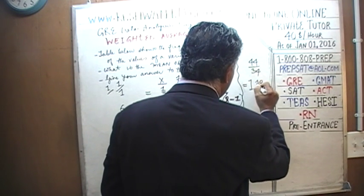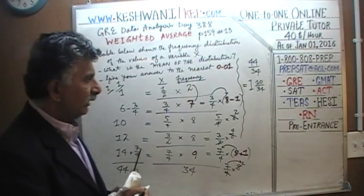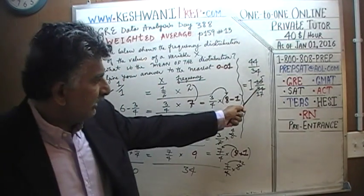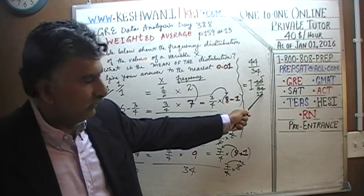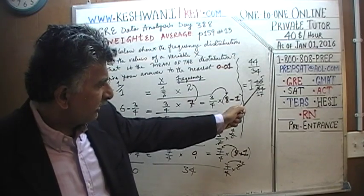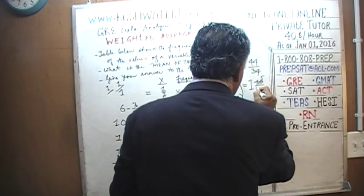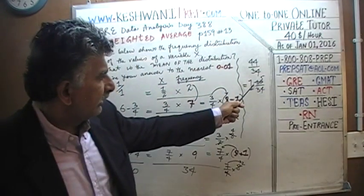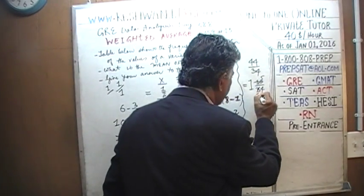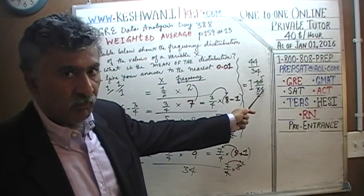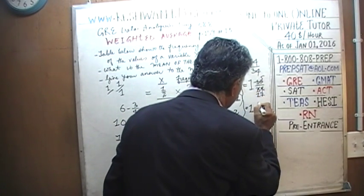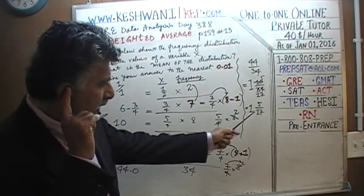Forty-four divided by thirty-four equals one and ten thirty-fourths. When we reduce that fraction by dividing top and bottom by two: ten divided by two is five, and thirty-four divided by two is seventeen. So we get one and five-seventeenths.